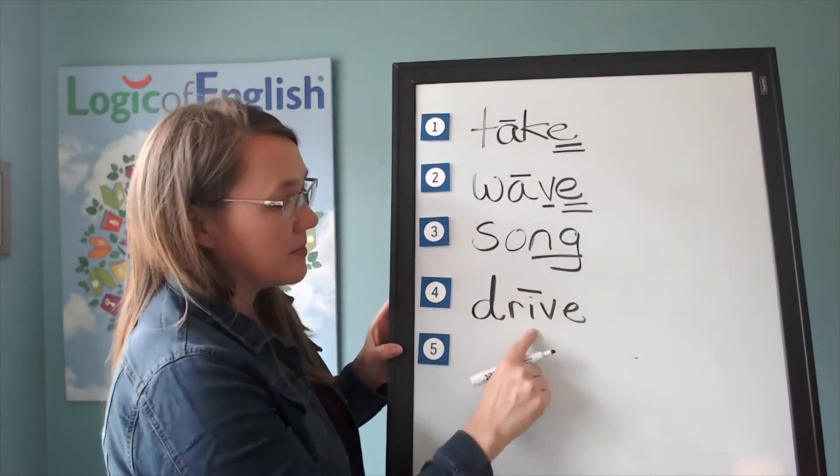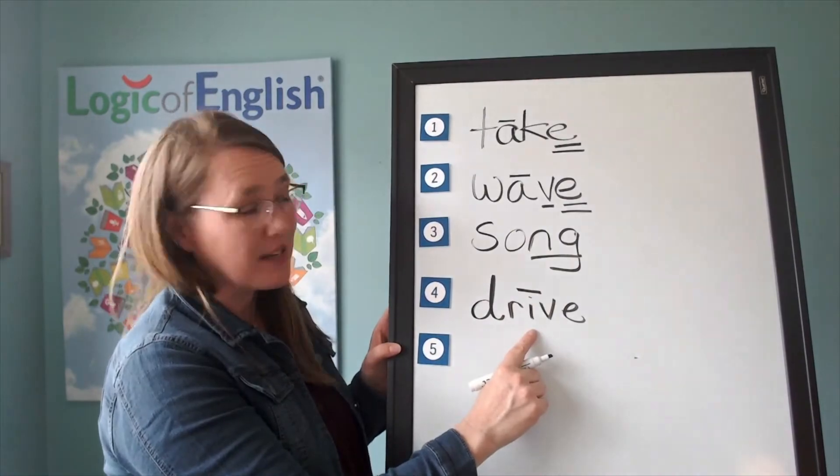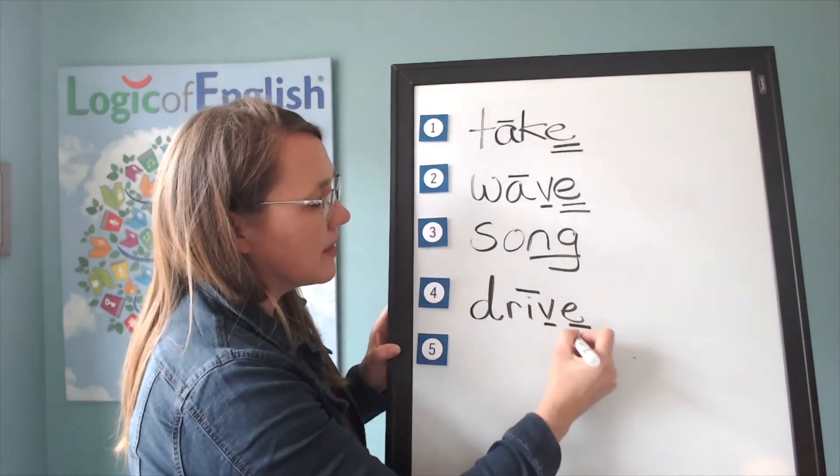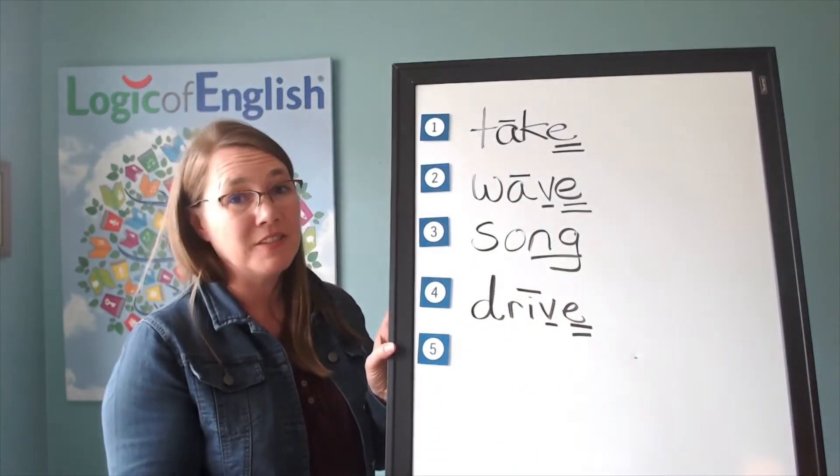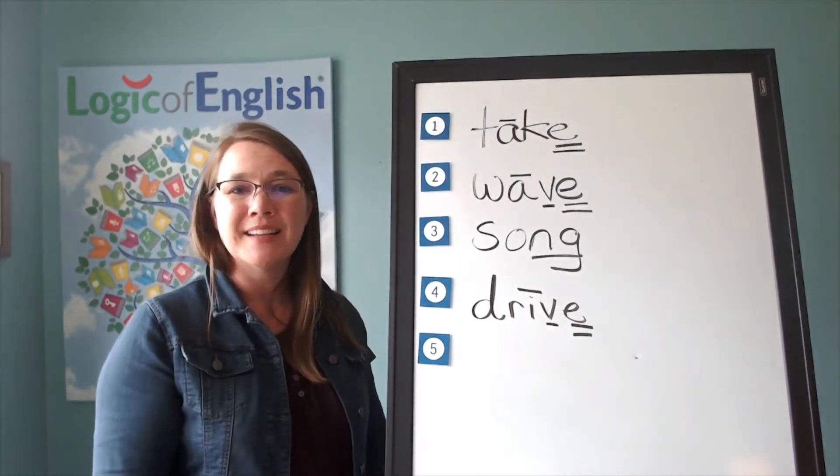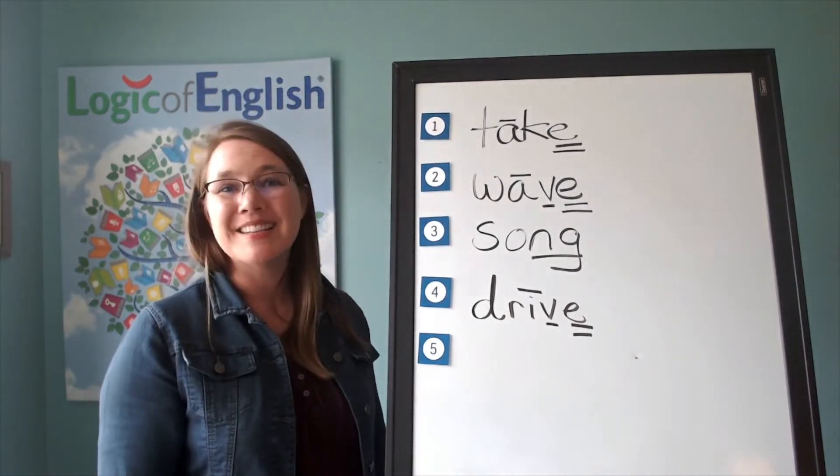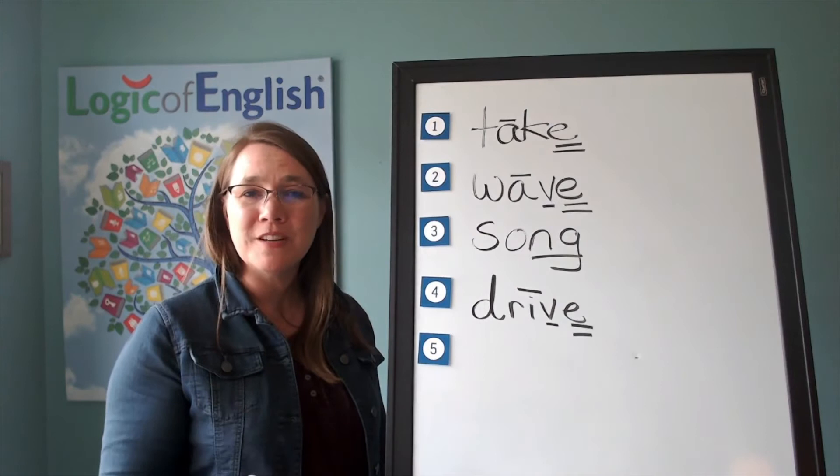First, it helps the I say its long sound, I, and it's there because English words do not end in V. What's the whole rule? English words do not end in I, U, V, or J.